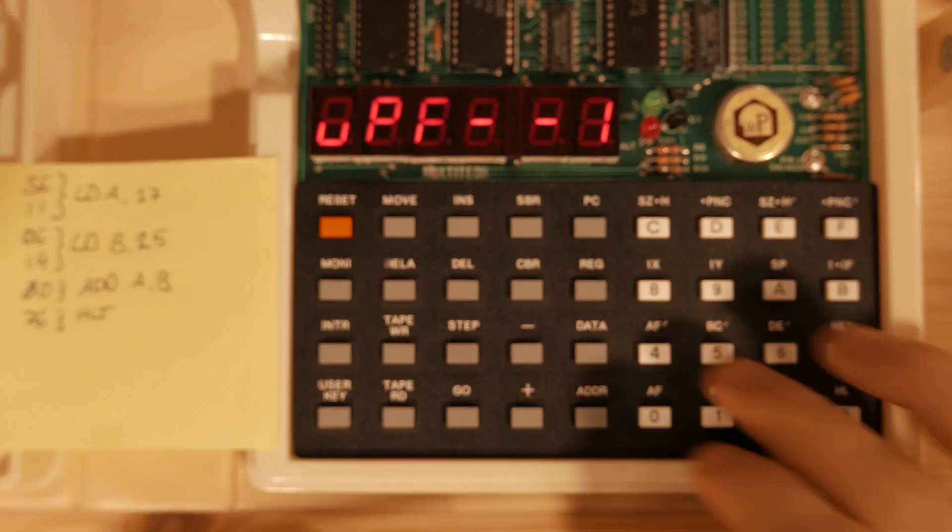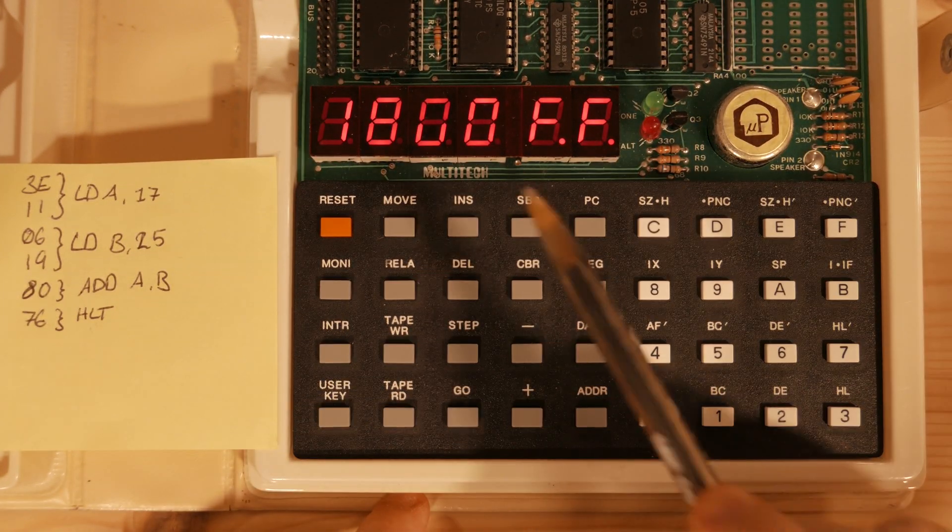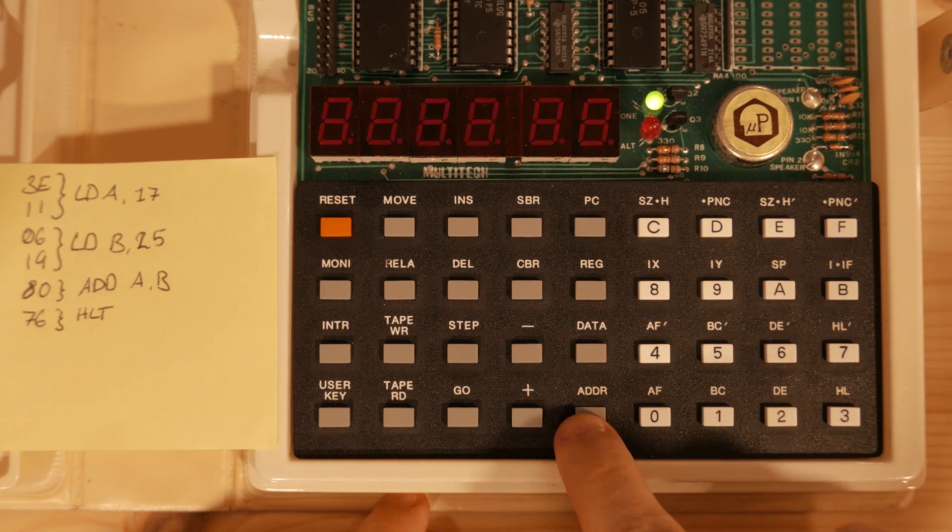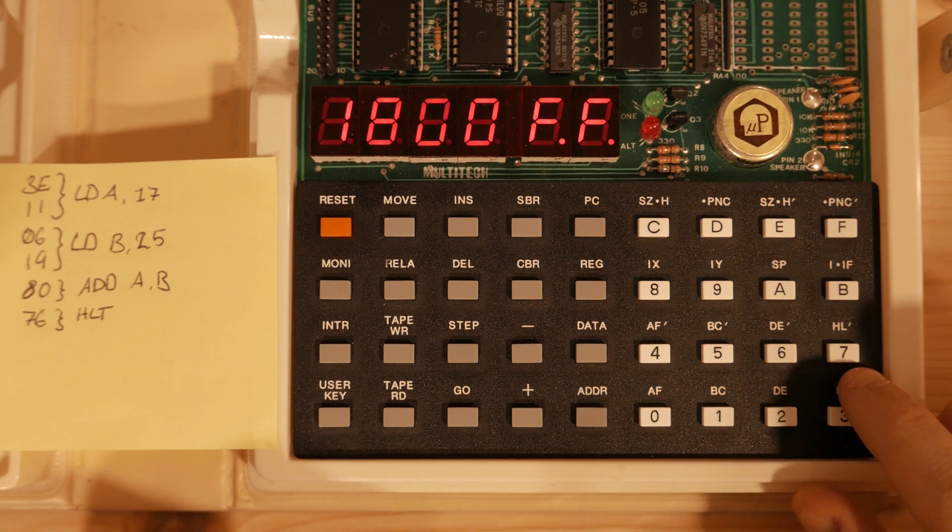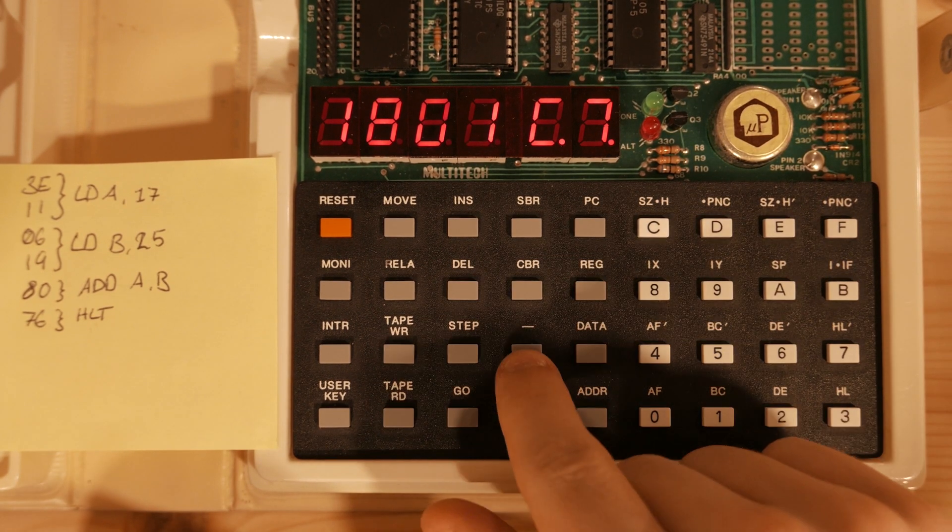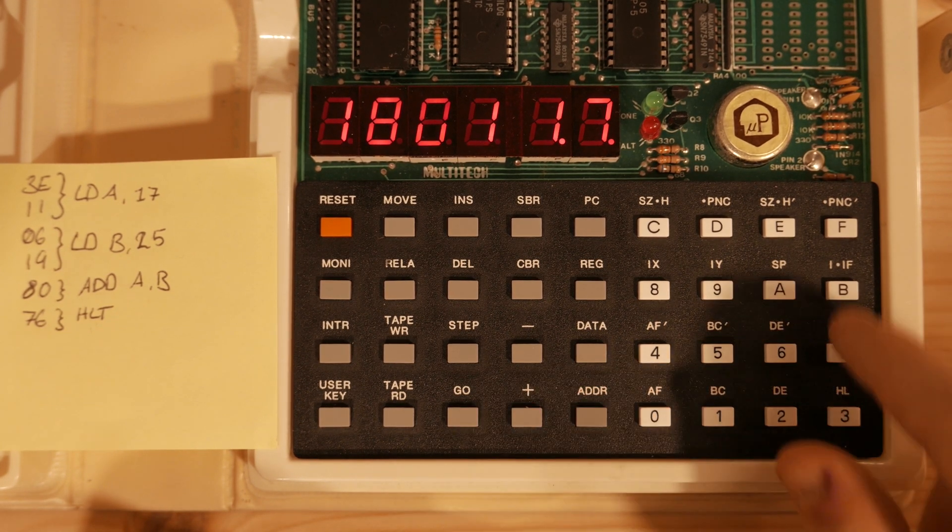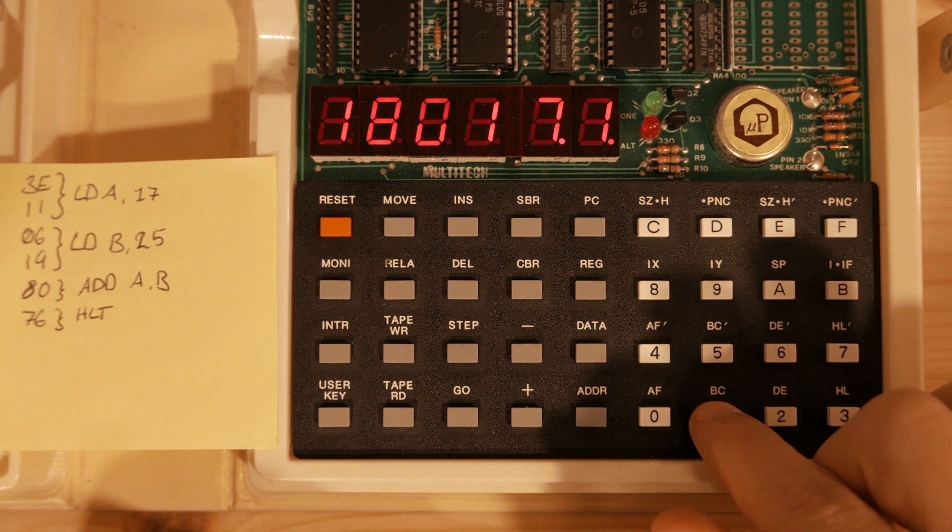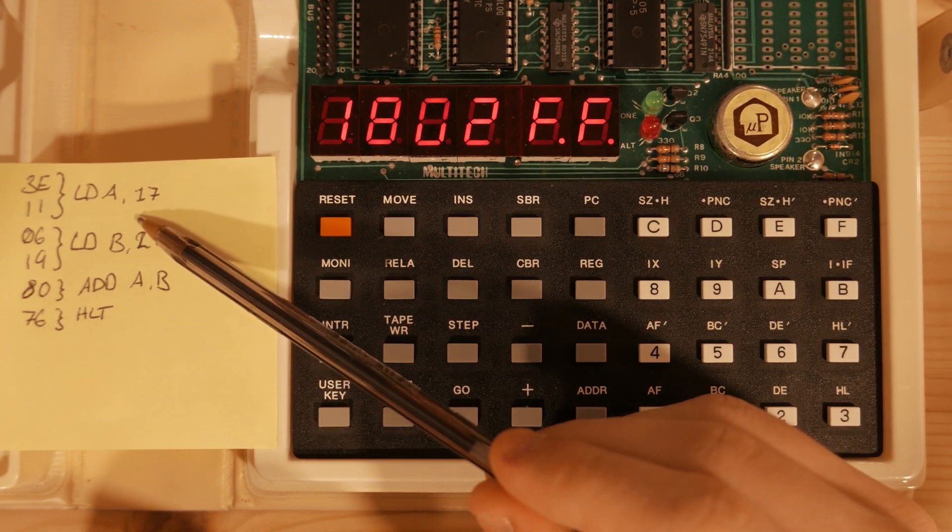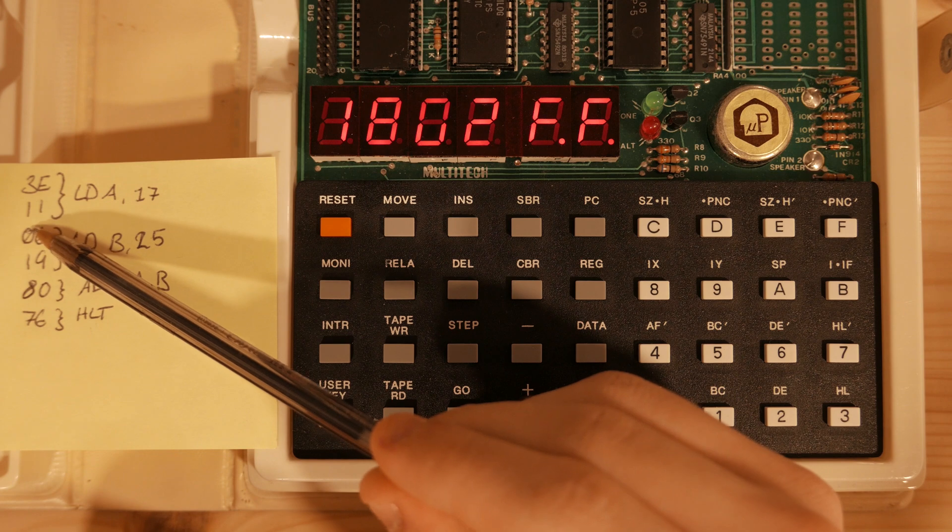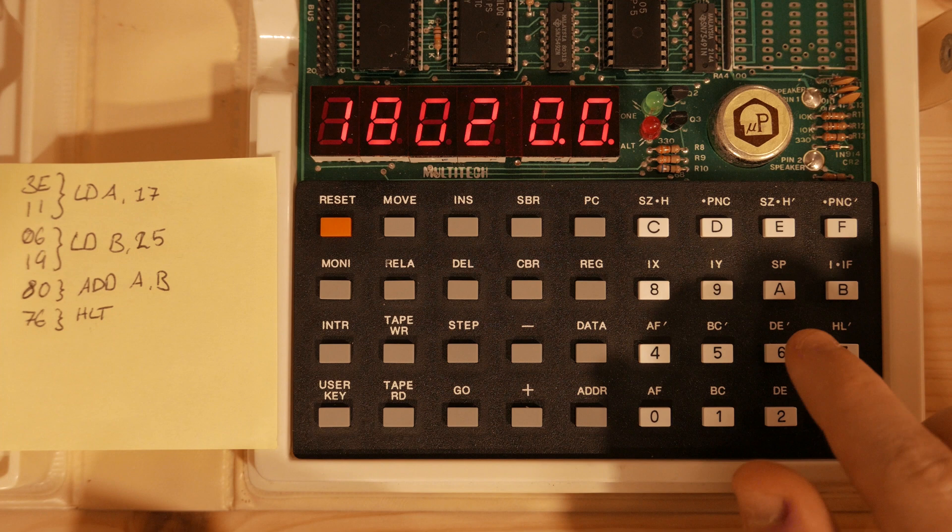If we just input this program real quick, go to PC, we press Data to input Data, and you see the dots are over here. If I press Address, you can see that the dots are over here, but we are going to be inputting data. So that is 3E, plus to go forward an address, minus to go back. That is 11 because the decimal value 17 is 11 in hexadecimal. At 02, we put 06.